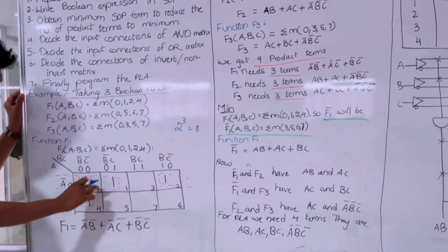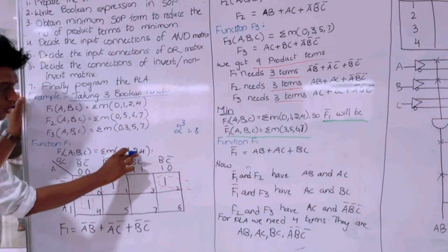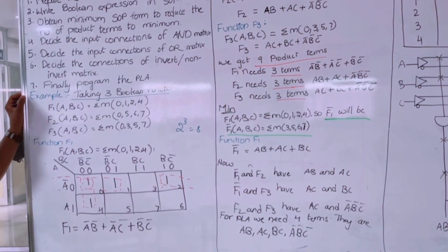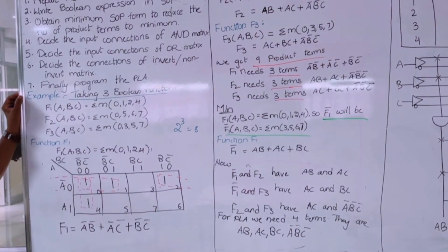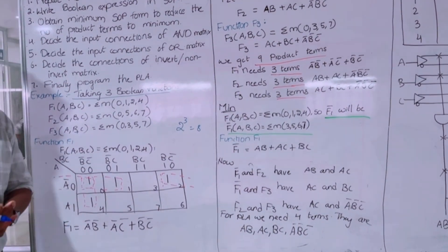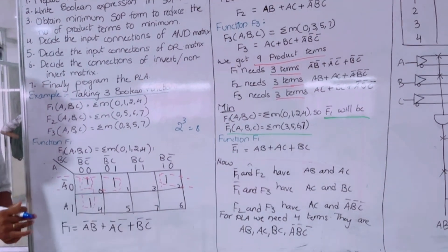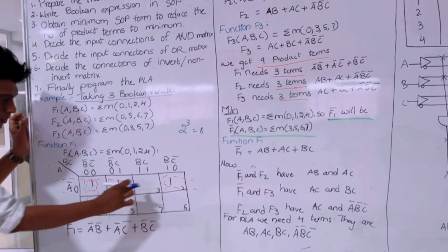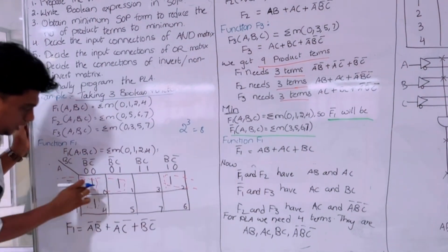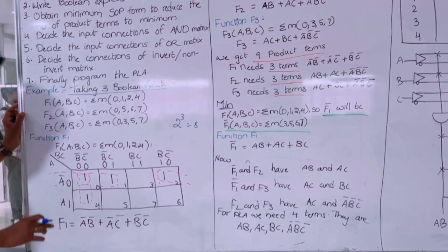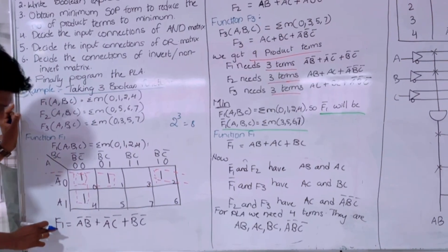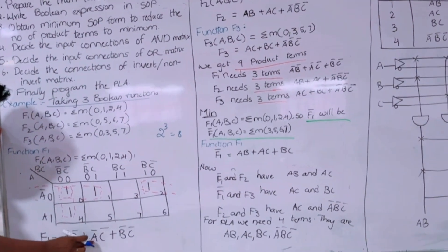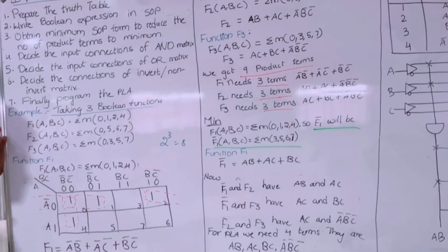We have to place the ones at positions 0, 1, 2, and 4, and group them. Grouping is done in powers of two. Here we have one group and another group, forming the groups in the KMAP. After simplifying, we get F1 equal to A-bar B-bar plus A-bar C-bar plus B-bar C-bar.